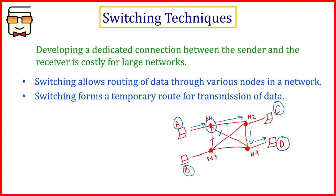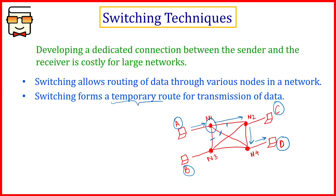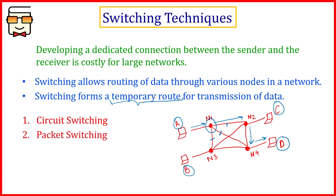Basically, what we are doing is forming a temporary route for data transmission. This route is not fixed — it may vary every time. Now, depending on how this temporary route is created, we have two types of switching techniques: the first is circuit switching, and the second is packet switching.